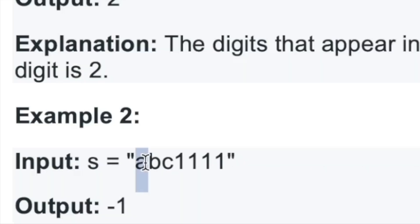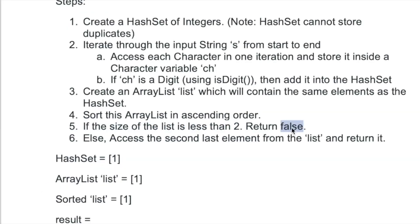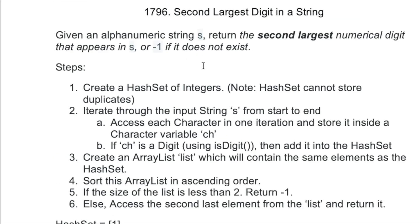For the second example, iterating through the string: the first few characters are not digits. We find a one and add it to the hash set. The remaining digit characters are all ones, which are already present in the hash set, so they are not added. At the end, the hash set contains only one element. We convert it to a list, sort it, then check the size — it is less than two, so we return minus one as the output. The logic handles this case correctly.